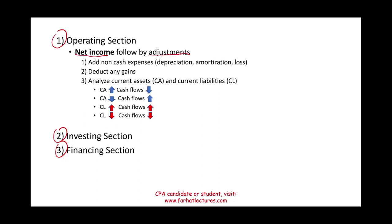In the prior session we looked into details about those steps, but I'm going to go over them briefly. We add non-cash expenses to net income such as depreciation, amortization, and losses. Losses are a separate category but think of them as non-cash expenses. Just like we add losses, we deduct gains.